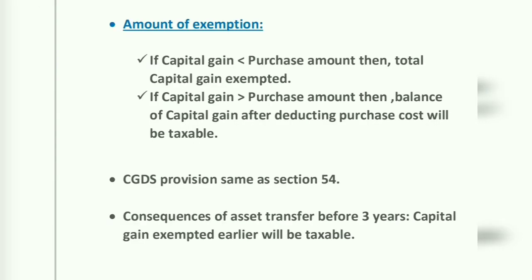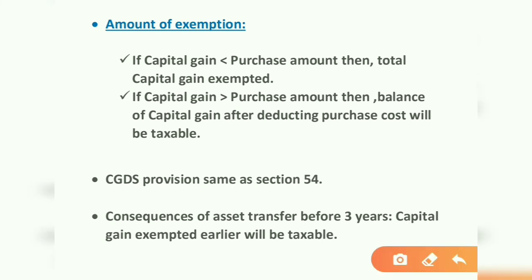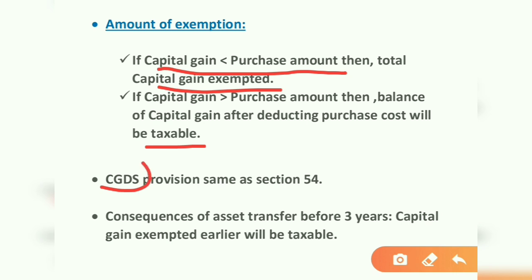Regarding the amount of exemption: if the capital gain is less than the purchase amount, then the total capital gain will be exempted. If the capital gain is more than the purchase amount, then the balance of capital gain after deducting the purchase cost will be taxable. The lower of the two — capital gain or purchase cost — will be exempted.